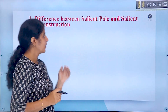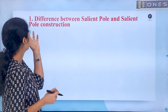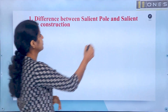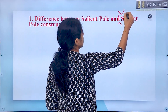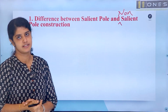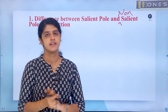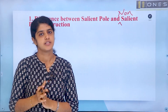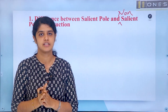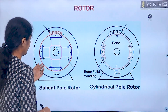Let's start with the difference between salient pole and non-salient pole construction. In this machine, we will classify two types of rotor construction: salient pole and non-salient pole.